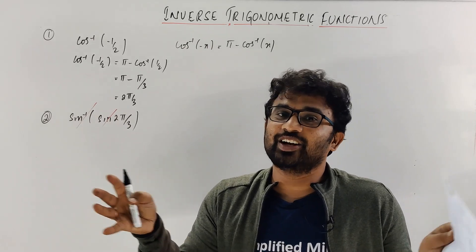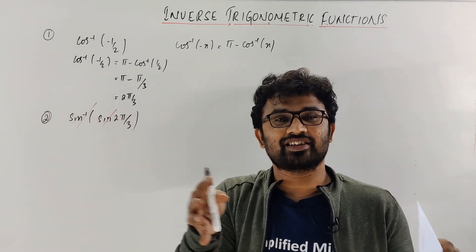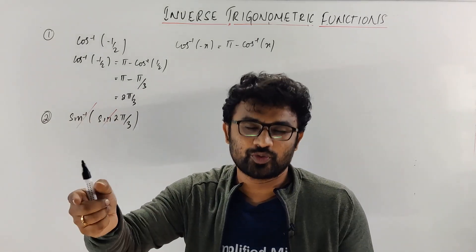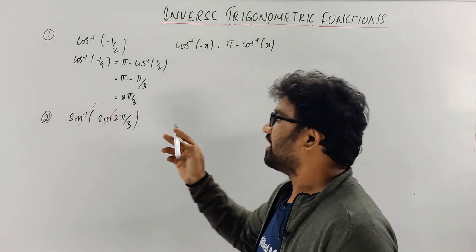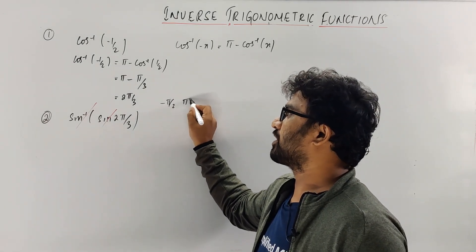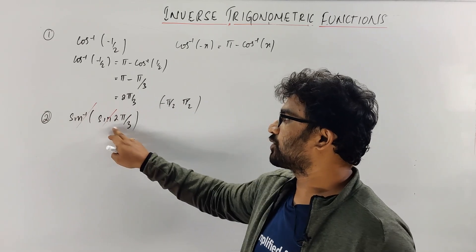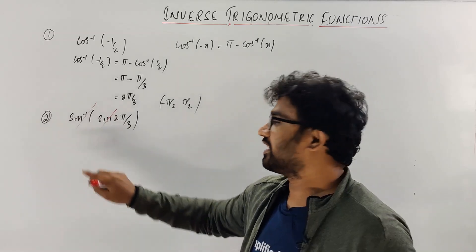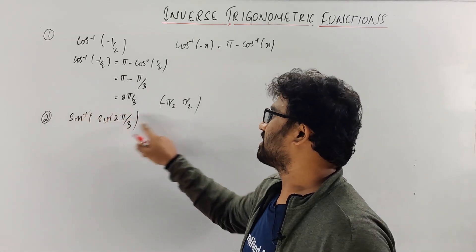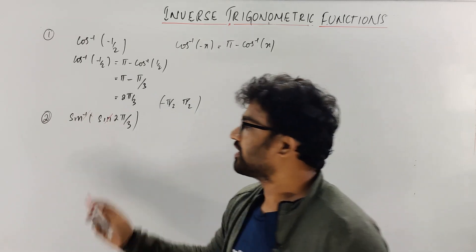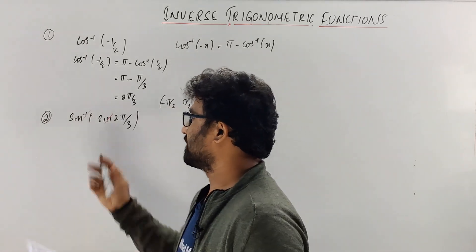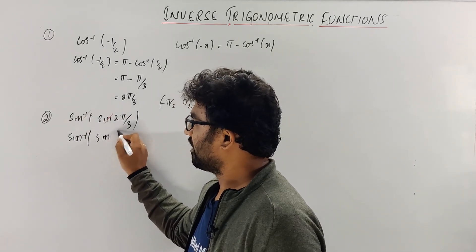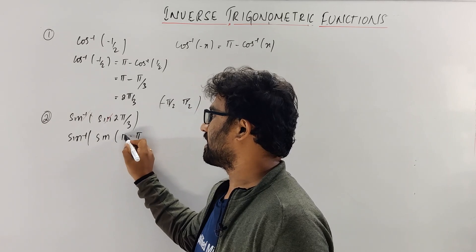In the previous lecture, there is domain restriction. We need to make the sin function one-to-one and onto. To make it invertible, we clearly fix the range — the principal value — from −π/2 to π/2. Since 2π/3 is not lying between −π/2 and π/2, we cannot directly cancel.